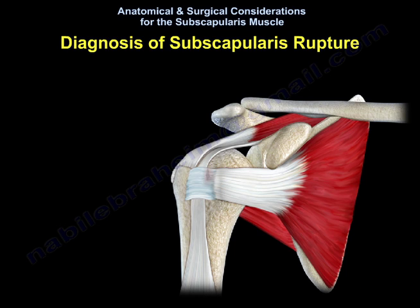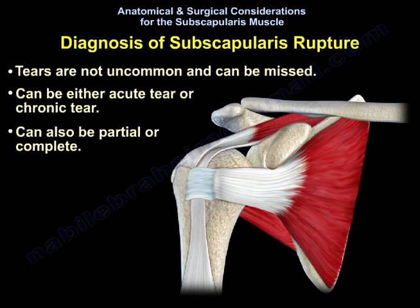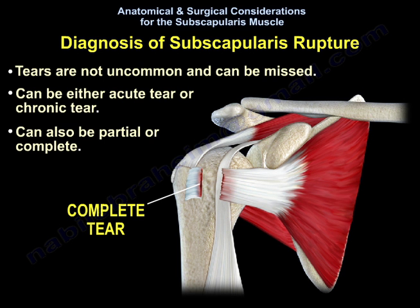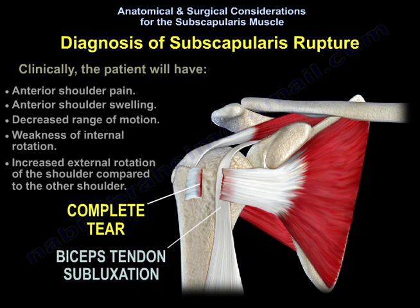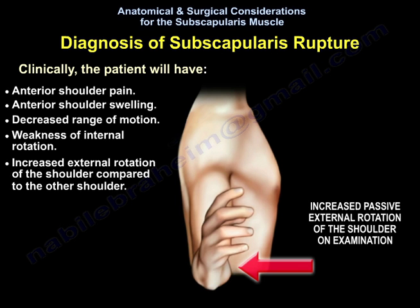Diagnosis of subscapularis rupture: Tears are not uncommon and can be missed. They can be either acute or chronic, and either partial or complete. Clinically, the patient will have anterior shoulder pain, anterior shoulder swelling, decreased range of motion, weakness of internal rotation, and increased external rotation compared to the other shoulder.